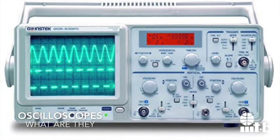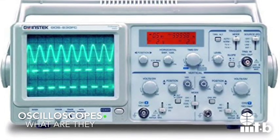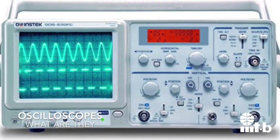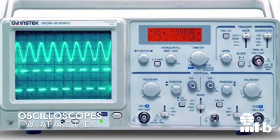An oscilloscope is a type of electronic test instrument that allows observation of varying signal voltages, usually as a two-dimensional plot of one or more signals as a function of time.